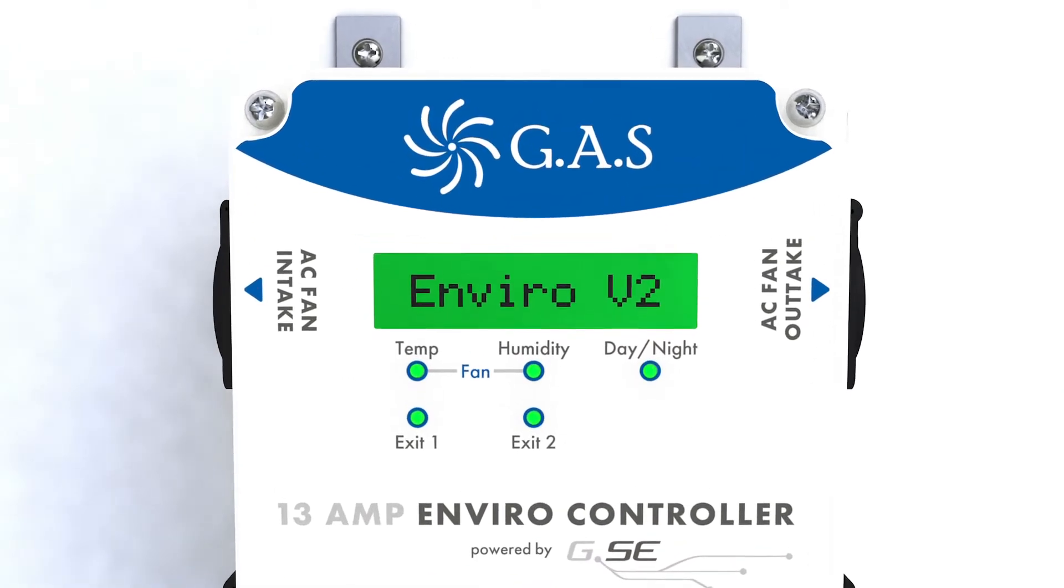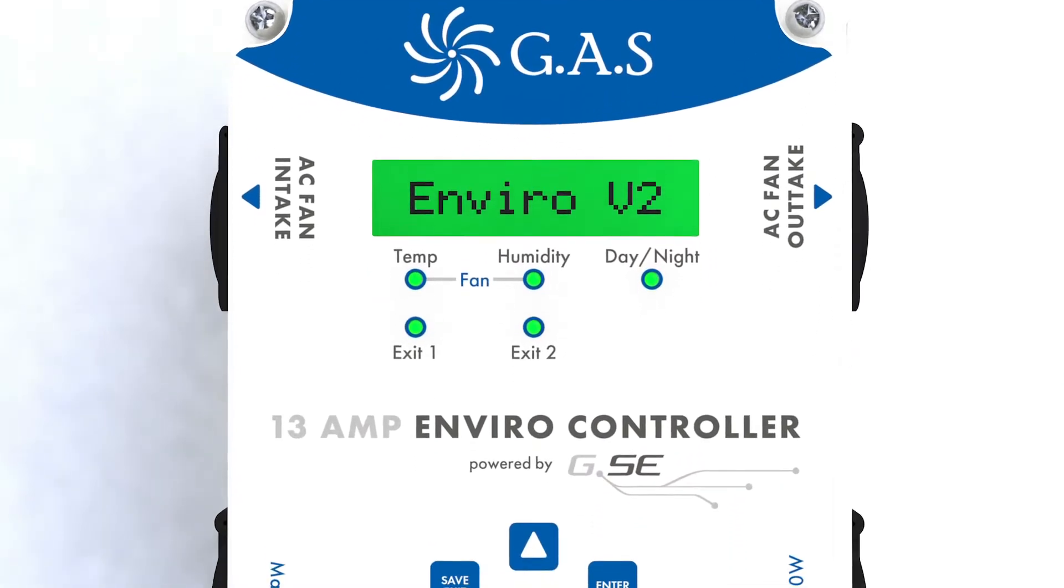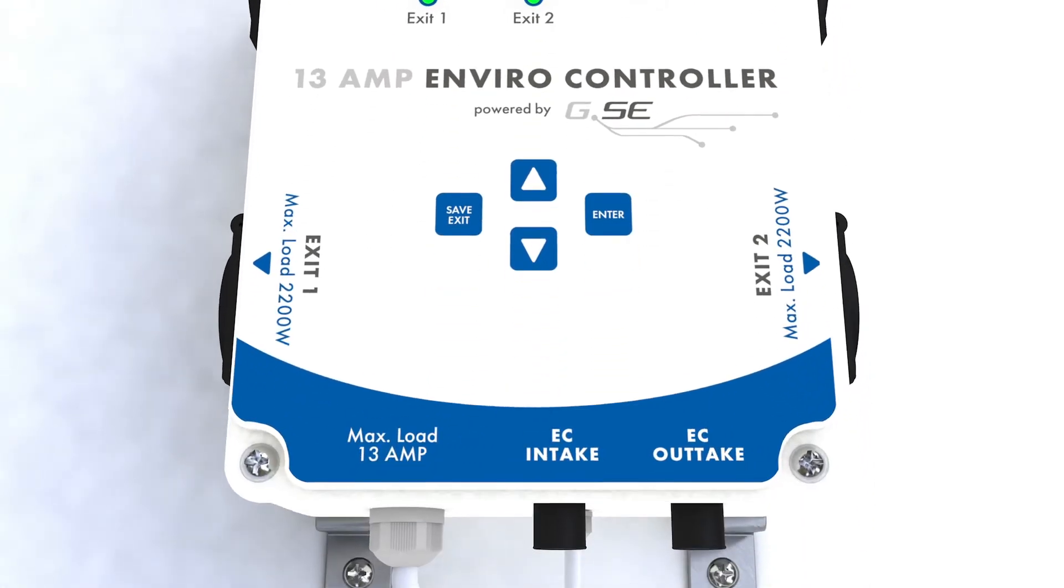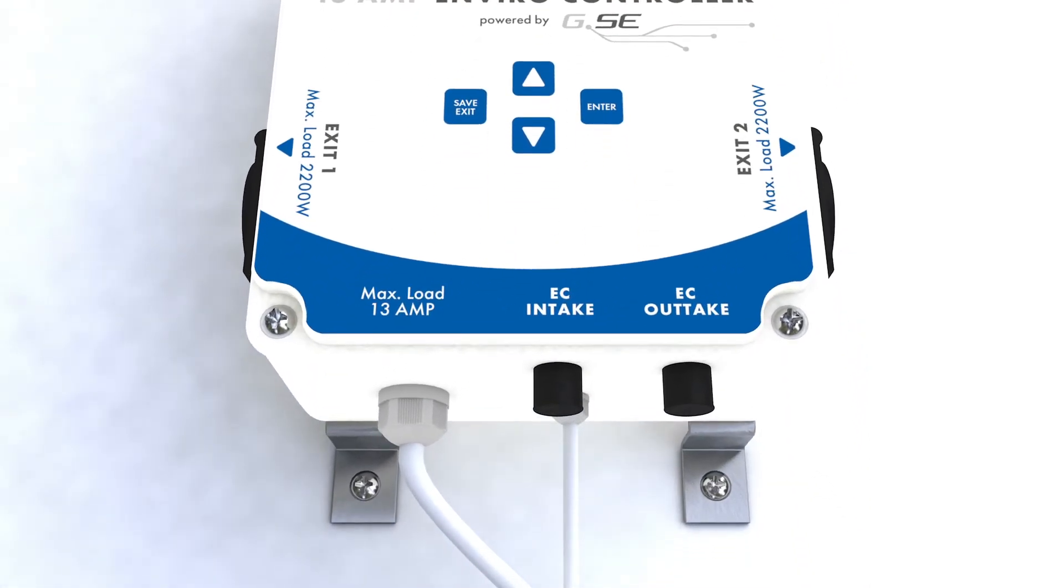The controller features two AC sockets at the top for both intake and outtake. Similarly, there are two EC sockets where you can connect an EC fan and control the intake and outtake.